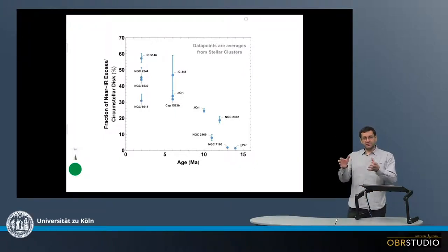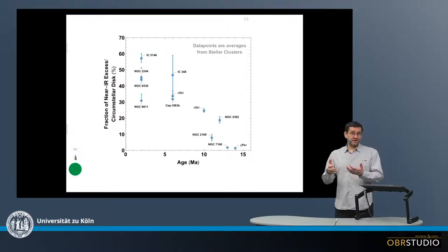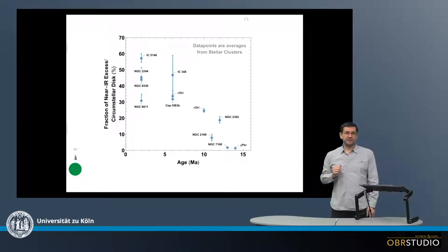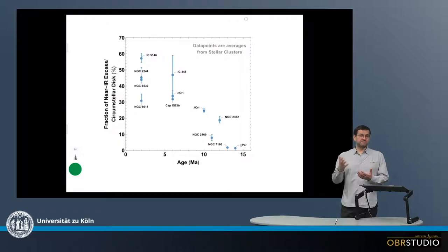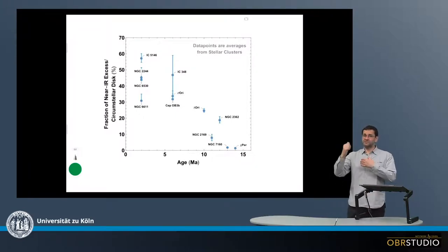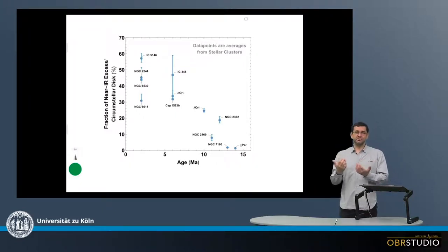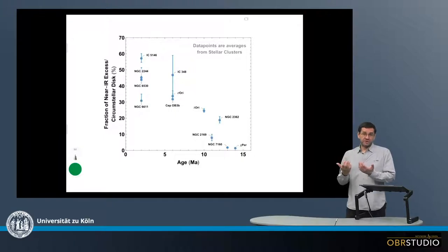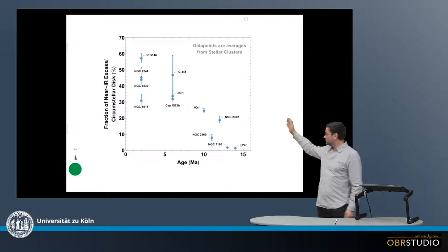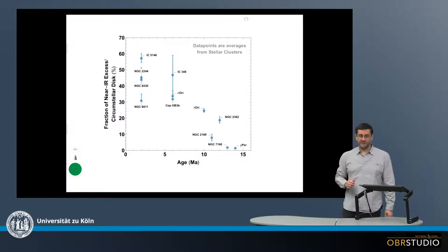Now the age of these stars that all form more or less together can be measured in such a stellar cluster, and the mean age is shown here on the x-axis. It's also possible to observe the circumstellar disks, and these disks have an infrared excess. The fraction of the infrared excess of these disks can be used or is a measure for how much of this disk is still present, and this is what is shown here on the y-axis.